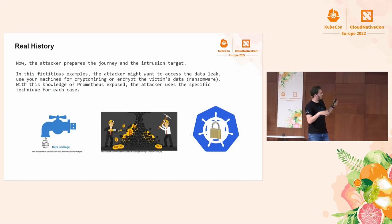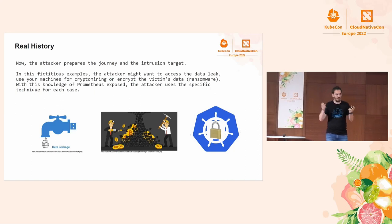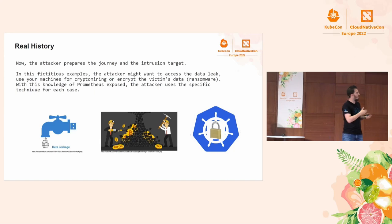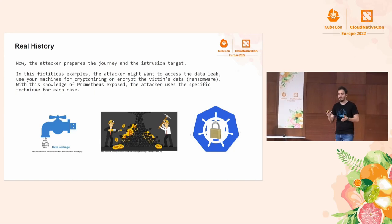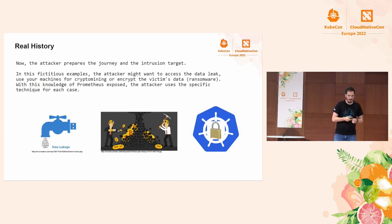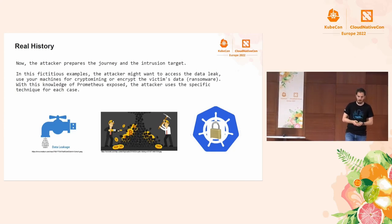We'd like to present three different example scenarios showing how this information can be used to achieve an attacker's goal — whether that's data leakage, crypto mining, or ransomware. The technique and path vary depending on the goal, and it's interesting to see what can be done with all this gathered information.